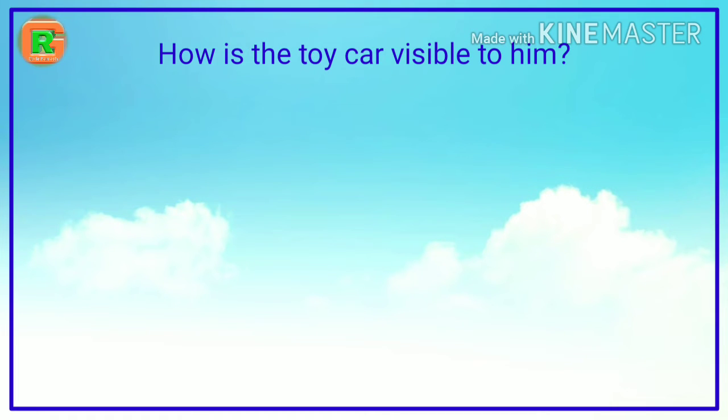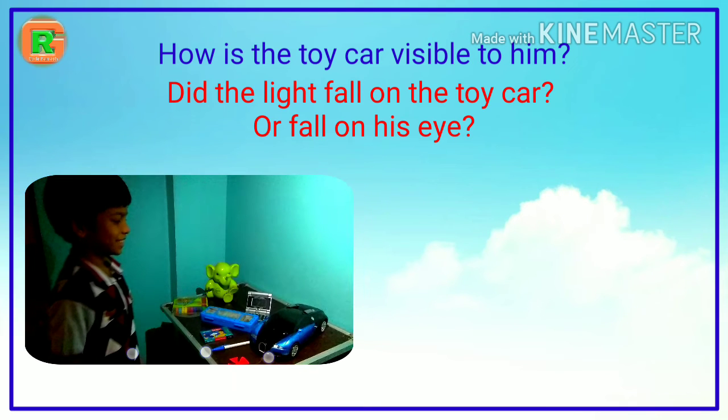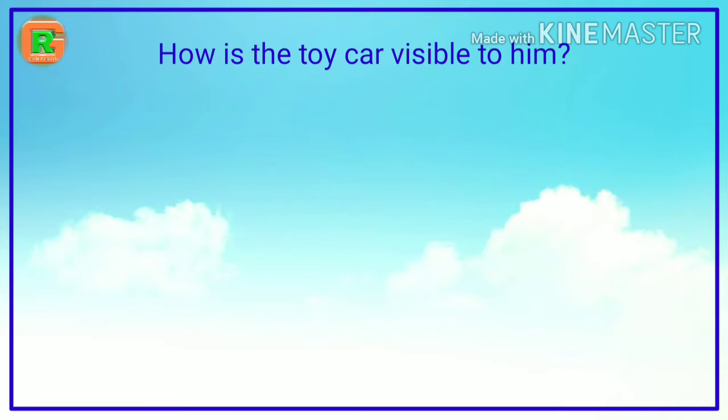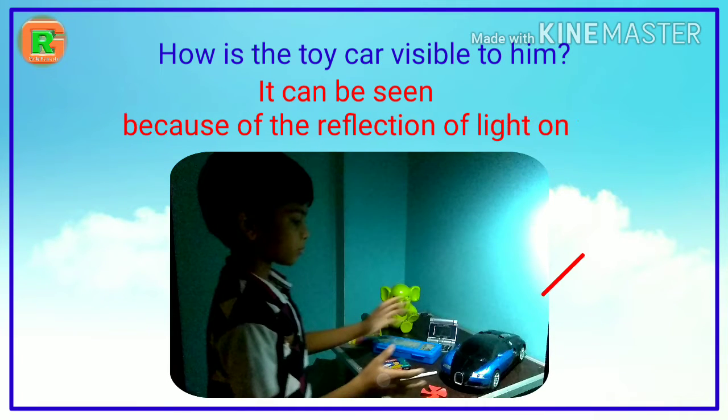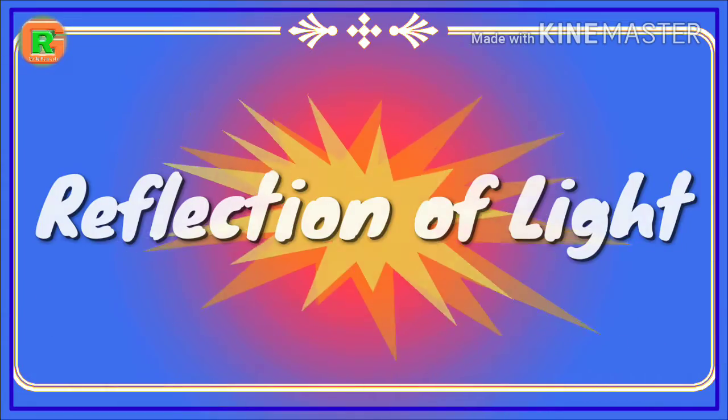In this situation, how is the toy car visible to him? Did the light fall on the toy car or fall on his eye? Yes, when the light falls on the toy car, then only it is visible to him. It can be seen because of the reflection of the light on the objects. So today, we are going to learn about reflection of light.